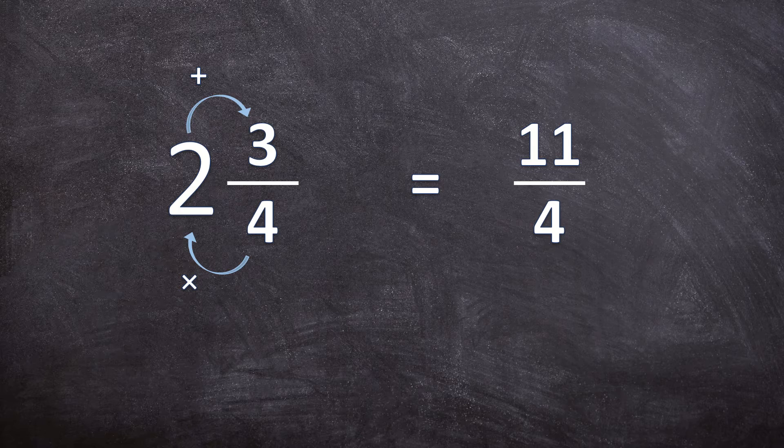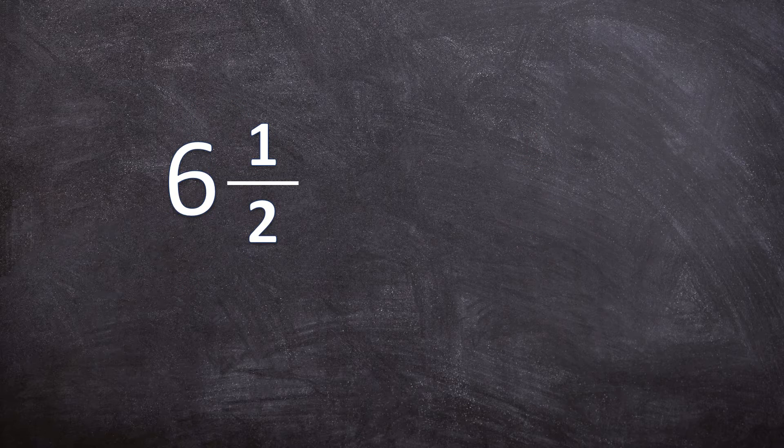But remember the denominator stays the same because the denominator represents how many parts one whole is divided into. Now let's look at another example. Six and a half. Let's convert the mixed number six and a half to an improper fraction.